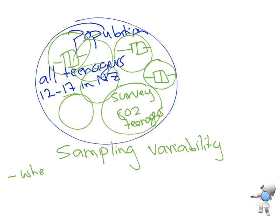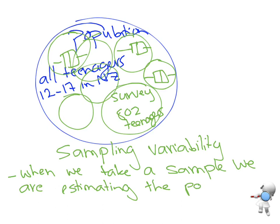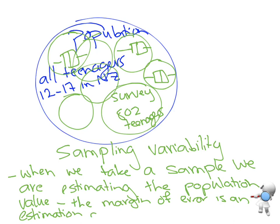When we take a sample we are estimating the population value. And because we're doing an estimate we need that margin of error to give us a range of values that it is likely to be between. The margin of error is an estimate of the variation in the survey itself. So those are the two big ideas.